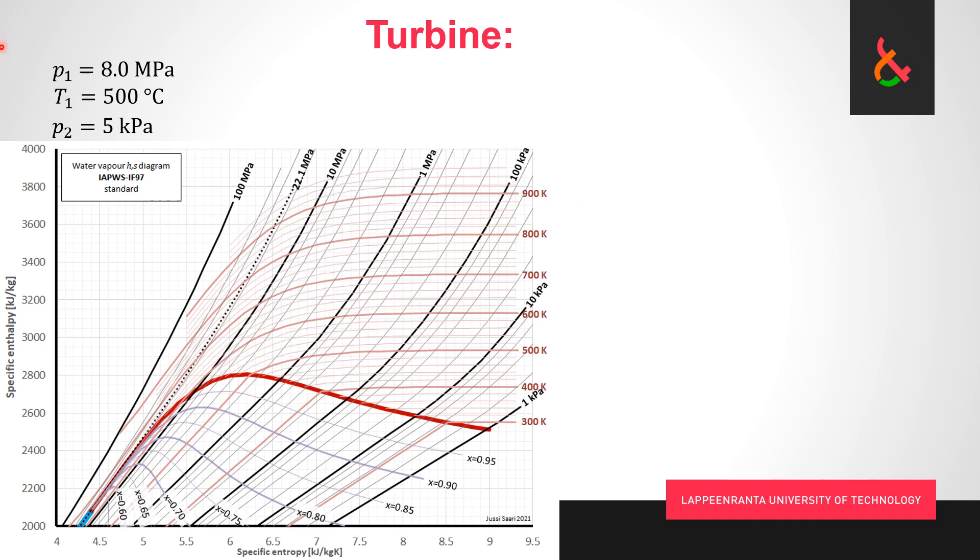We know the inlet state. In the h-s diagram, we look for the point where the 8 megapascal curve crosses the 500 degree Celsius curve. 500 degrees Celsius is 773 Kelvin—we add 273—and we're somewhere right about here. We check where we cross the 8 megapascal line, we find the crossing point right over there, and then we move to the vertical axis. We check what the number is, it should be about 3400 kilojoules per kilogram. So that's our h_1.